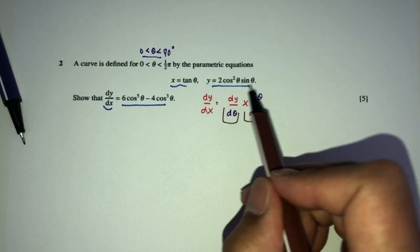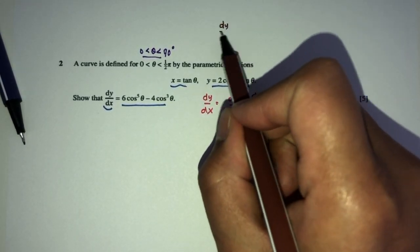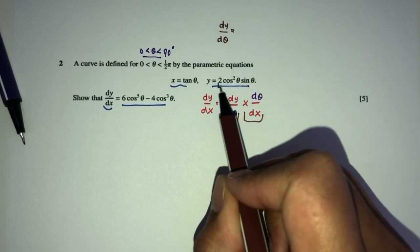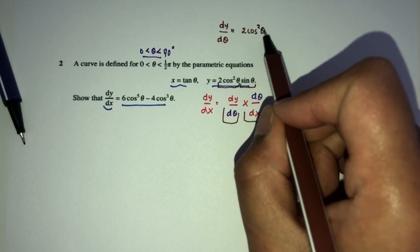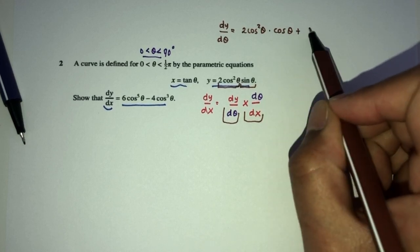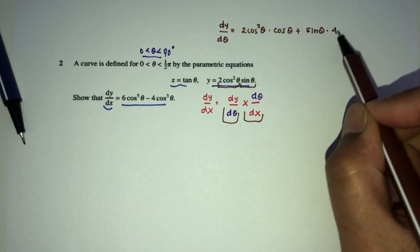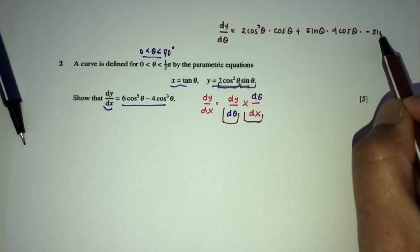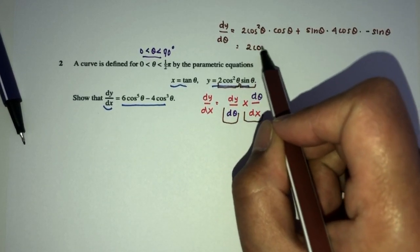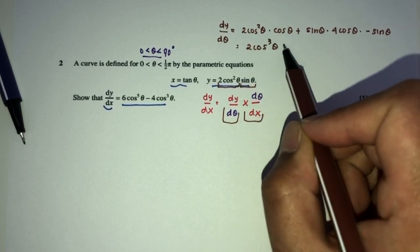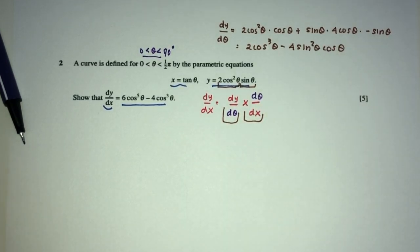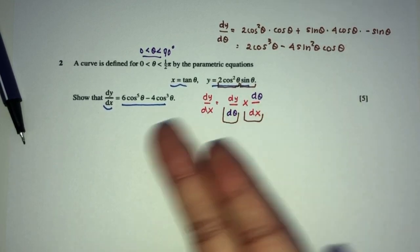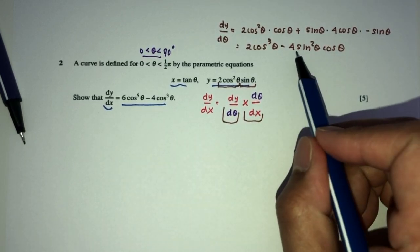So let's first differentiate y with respect to theta. dy by d theta will be what? It is a product, so we use the product rule. That will be 2 cos squared theta times cos theta plus sin theta times 4 cos theta times minus sin theta. That will become 2 cos cubed theta minus 4 sin squared theta times cos theta. Now, we can simplify because the final answer is in terms of cos only, so we can change sin squared theta to 1 minus cos squared theta.